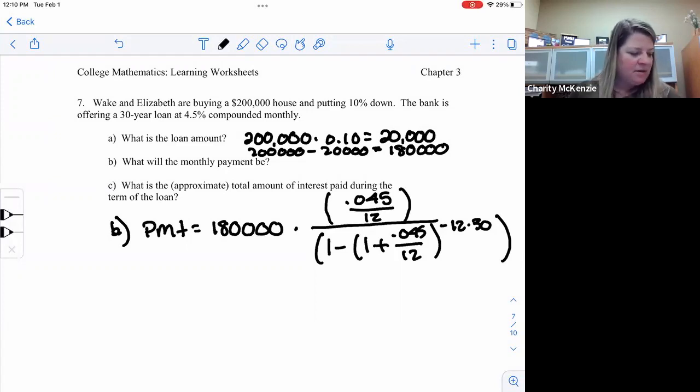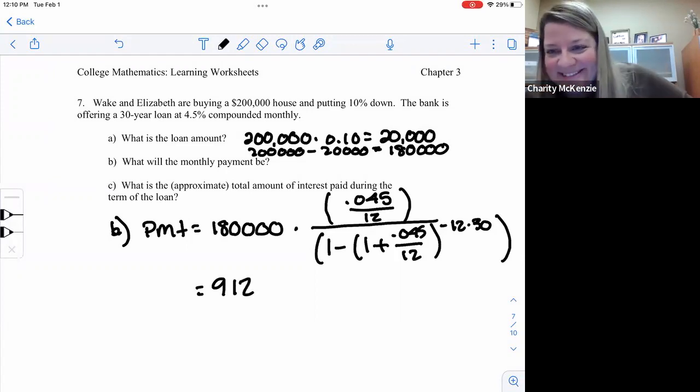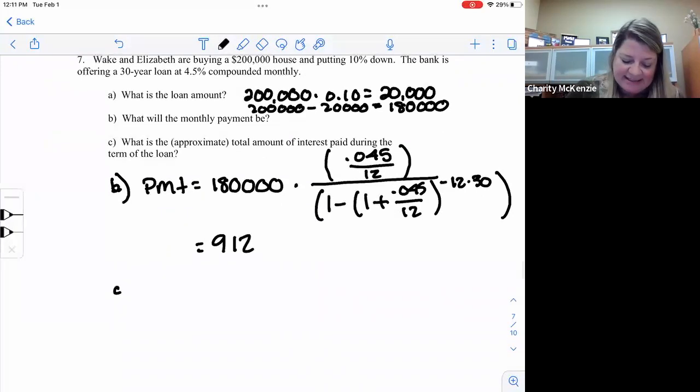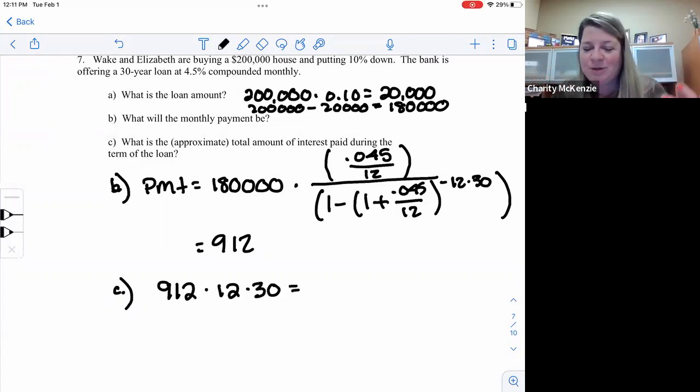So put that in and what's our payment going to be? They say the payment is $912. I don't usually go with what they said. So if you didn't get that number, I didn't actually do it. I just went with the key. What is the approximated total interest? So again, same idea. How much money am I paying a month for this house? $912. And I pay that every single month for 30 years. So this is my contribution with interest. This is what I'm paying.